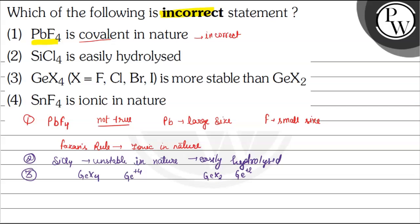Because of the inert pair effect, we know that Ge plus 4 is more stable than GeX2. That's why we can say that GeX4 is more stable than GeX2, that means the third statement is also correct.